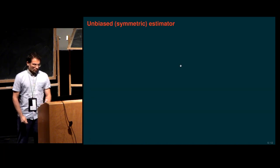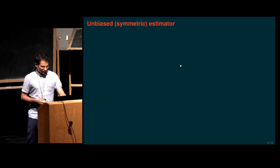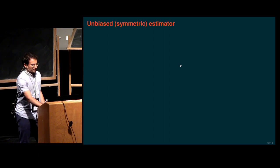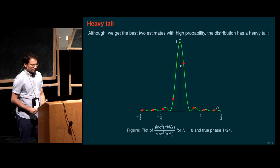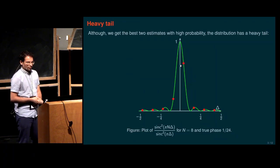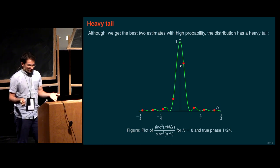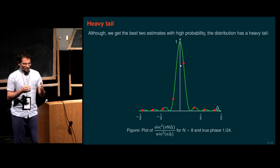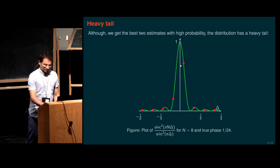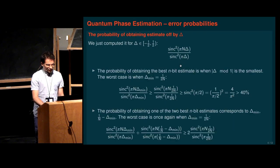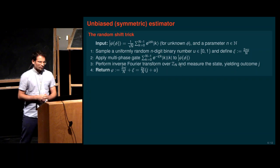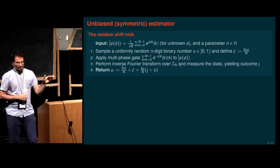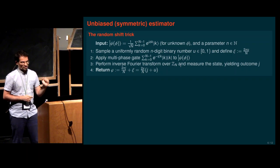Now I want to talk about symmetric estimation. The motivation is that the actual output distribution — the red dots — is not symmetric, so it's probably not an unbiased estimator of the true value. However, the underlying sinc function is nice. We can actually recover this very nice smooth sinc function as the true distribution of outputs. The trick is to apply a random shift.